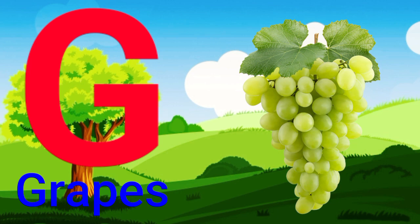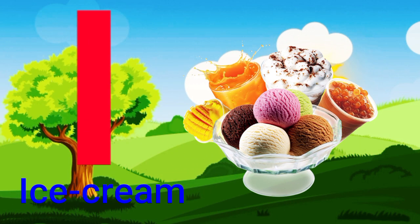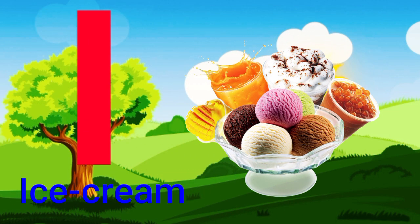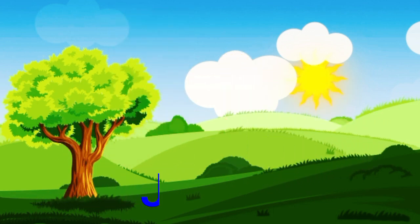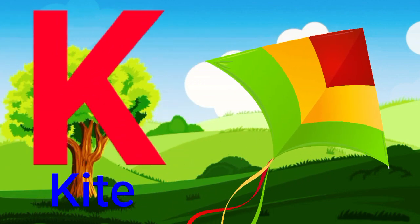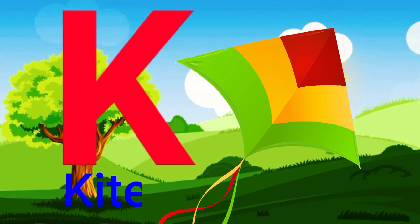G for grapes, H for hen, I for ice cream, J for juice, K for kite.